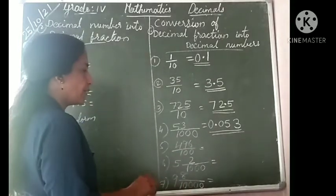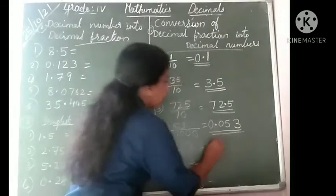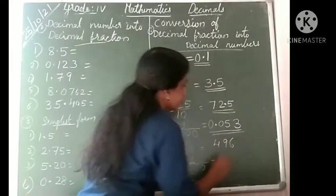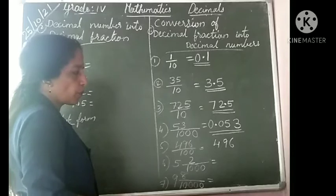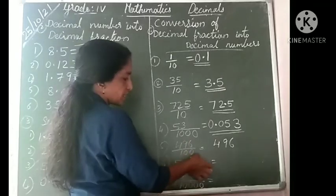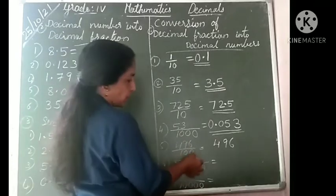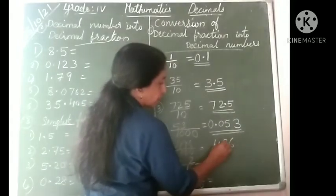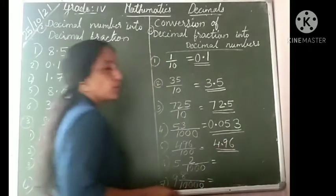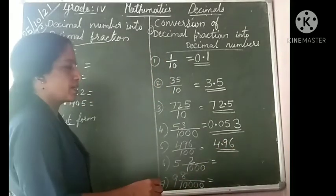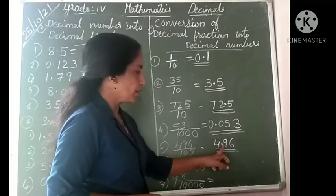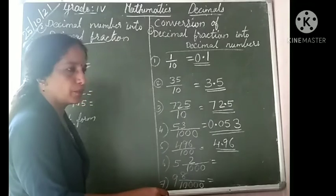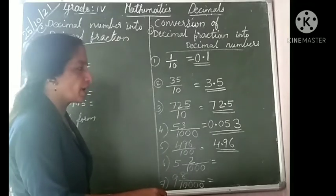Next: 496 divided by 100. The numerator is 496. The denominator is 100, which has two zeros, so we place the point two digits from the right. That gives 4.96 — 4 is the whole number, then decimal point and decimal number. Answer is 4.96.